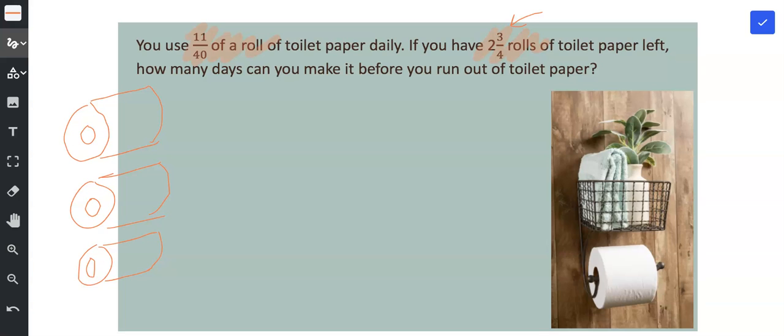And you use 11/40 of a roll of toilet paper each day. So basically we're trying to figure out how many 11/40 of a roll fit inside of 2 3/4 rolls, so we can figure out how many days left before you run out of toilet paper. So basically what we're doing is we're taking 2 3/4 rolls and we're dividing it by 11/40 of a roll. We're dividing it into that size groupings.